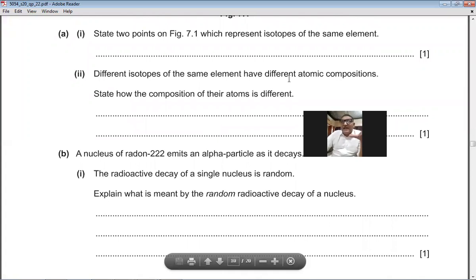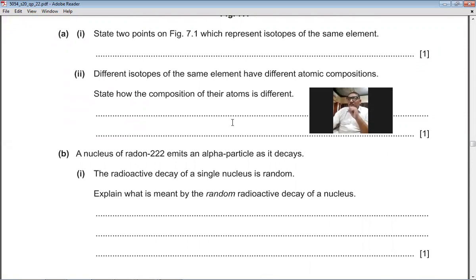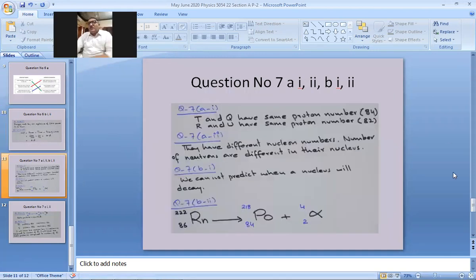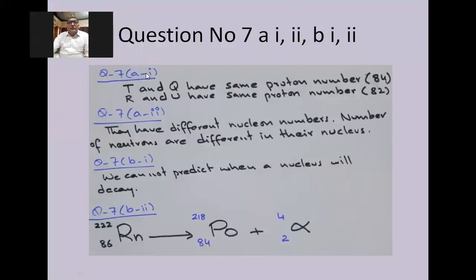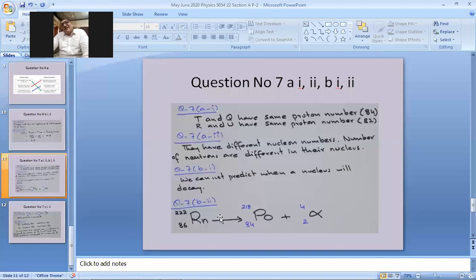Question 7(a), second part: state how the atomic composition of isotopes of the same element is different. Isotopes have the same proton number but different numbers of neutrons in their nuclei — their nucleon (mass) numbers differ. Their proton numbers are the same but neutron numbers are different. Marking scheme confirms: different nucleon numbers / different numbers of neutrons.